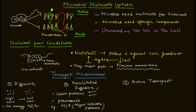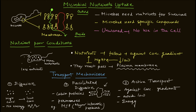The third mechanism is active transport, which works against the concentration gradient most of the time. A lot of energy is required in this case. Outside the cell the concentration is low, and inside the concentration is higher, so the molecule moves against the concentration gradient. Examples of these transporters are the ABC transporters of the cell.